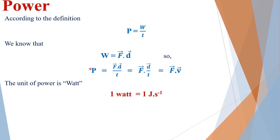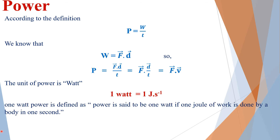The unit of power is watt. One watt equals one joule per second. Power is said to be one watt if one joule of work is done by a body in one second.